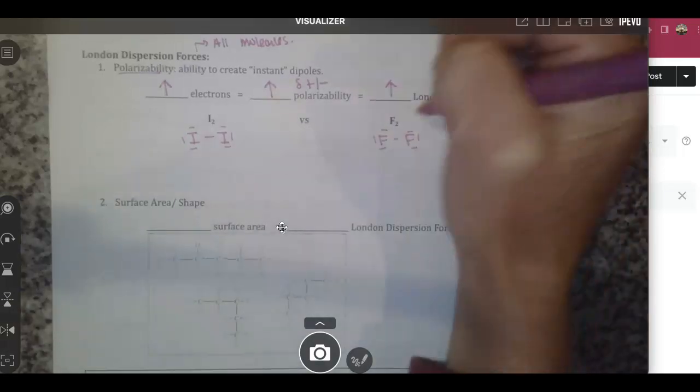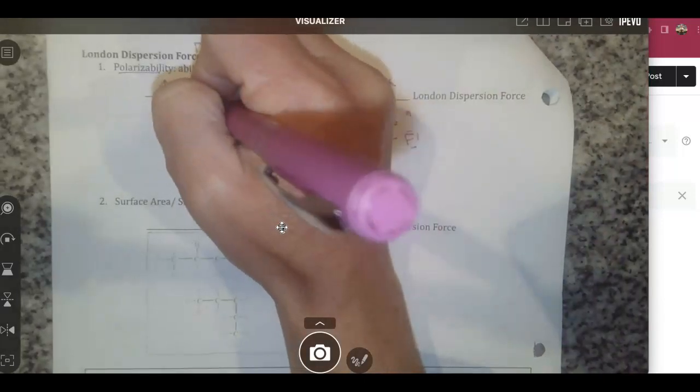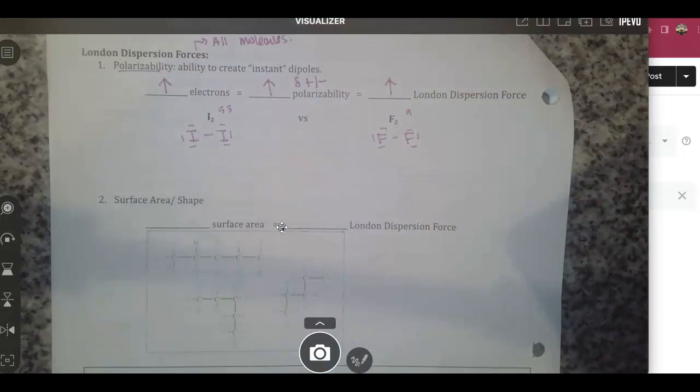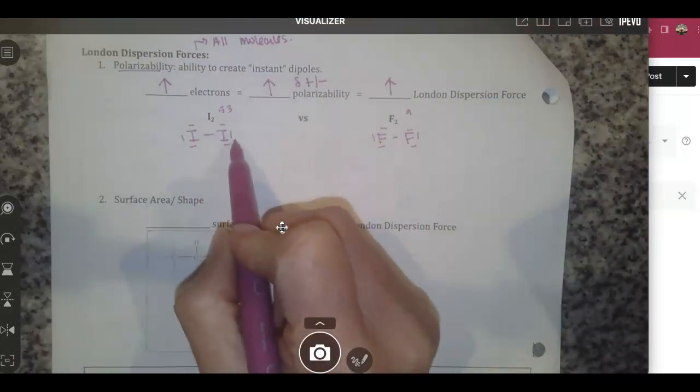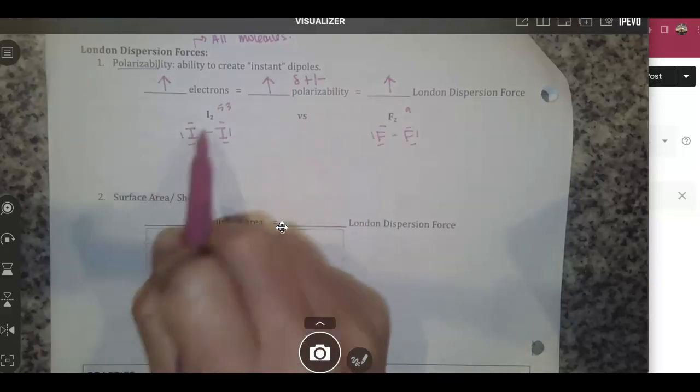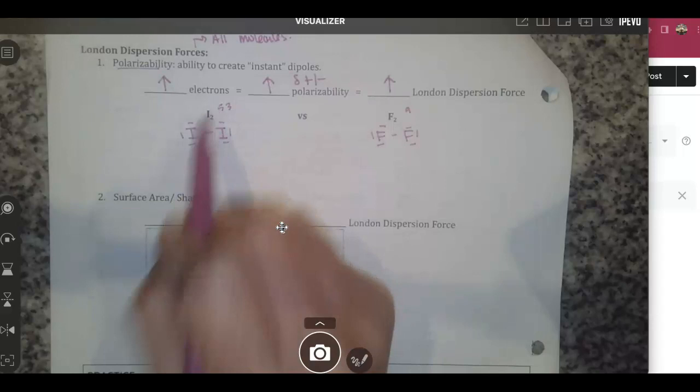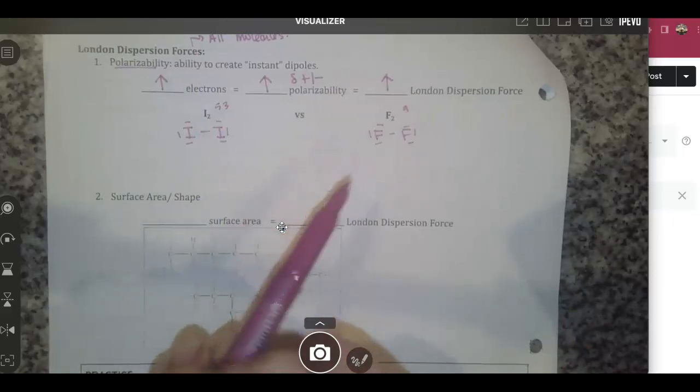Fluorine is number 9 on the periodic table and only in the second energy level, while iodine is number 53 on the periodic table and is down in the sixth energy level. So iodine is much bigger. If it has up to 53 electrons, it has way more electrons to create way more dipoles than fluorine, which only has 9 electrons.